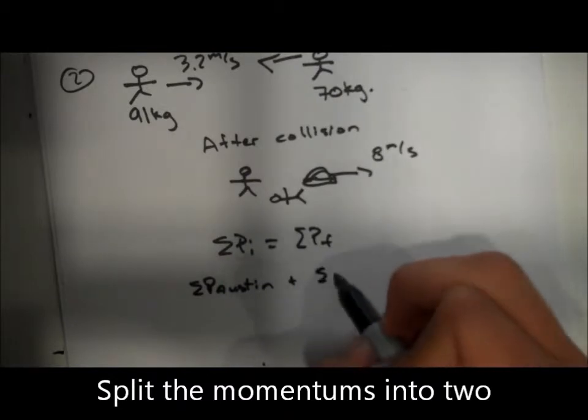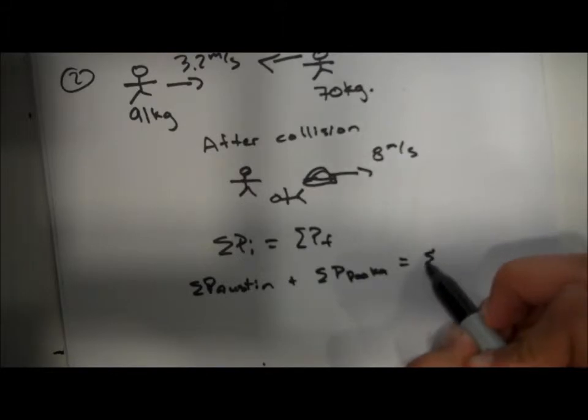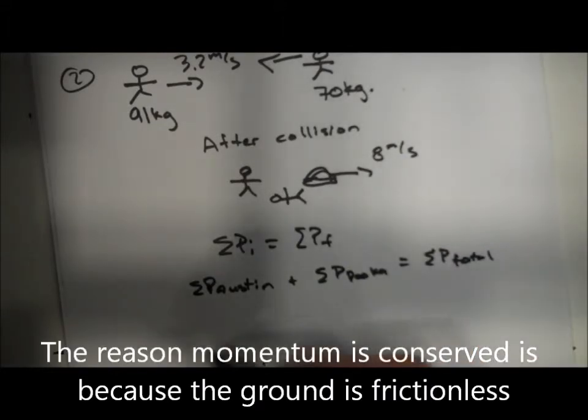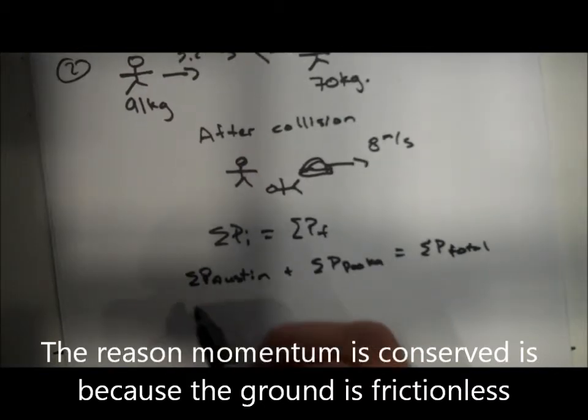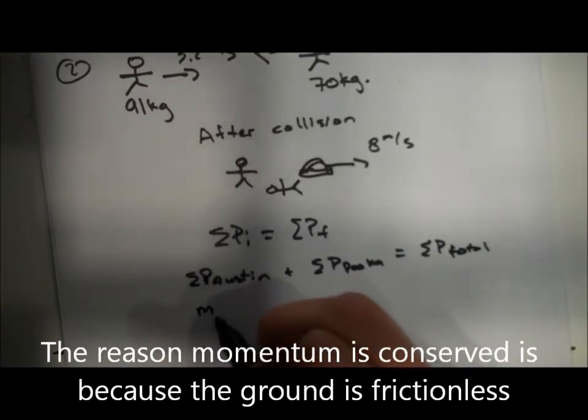So we have the initial momentum of Austin plus the initial momentum of puka equaling the final momentum of Austin plus the final momentum of the puka, which is the total.